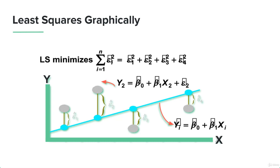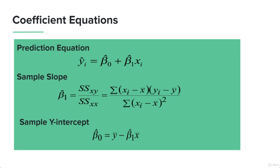Let's look at some math. We have the prediction equation — also known as the linear regression equation — with beta₀ and beta₁. Beta₀ acts as the y-intercept and beta₁ is the slope of the linear equation. These terms are assigned as slope and intercept only if there is a linear relationship between x and y. The slope — also known as the gradient — is calculated by summing the difference of the product of actual and predicted values of x and y, divided by the square of the sum of x values.